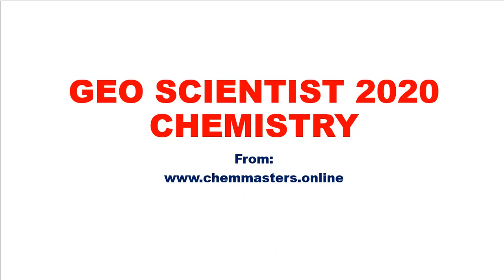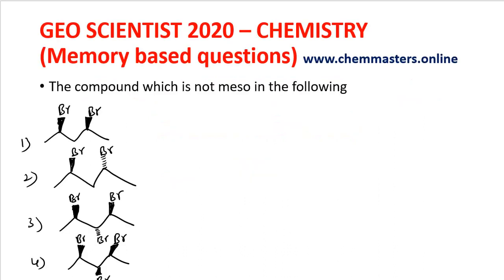Now just look at the question here: 'The compound which is not meso in the following.' First, look at the chiral carbons of each compound. Now try to give the priority order for RS notations: first priority for bromine, second priority for CH2, third priority for methyl, and fourth priority for hydrogen, which is at the backside. The priority direction is clockwise.